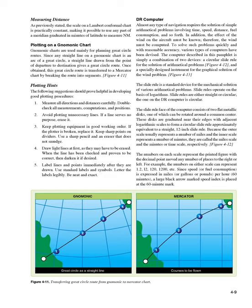2. Avoid plotting unnecessary lines. If a line serves no purpose, erase it. 3. Keep plotting equipment in good working order. If the plotter is broken, replace it. Keep sharp points on dividers. Use a sharp pencil and an eraser that does not smudge. 4. Draw light lines at first, as they may have to be erased. When the line has been checked and proven to be correct, then darken it if desired. 5. Label lines and points immediately after they are drawn. Use standard labels and symbols. Letter the labels legibly. Be neat and exact.